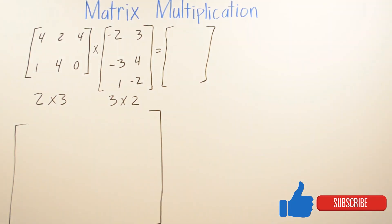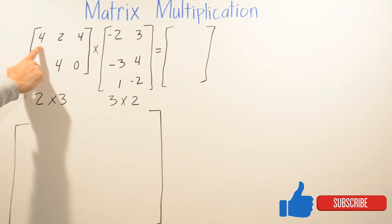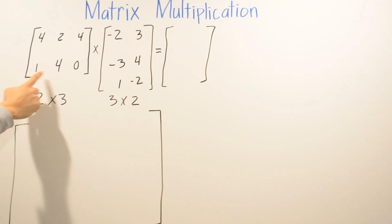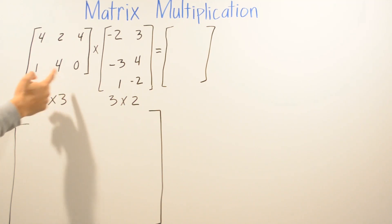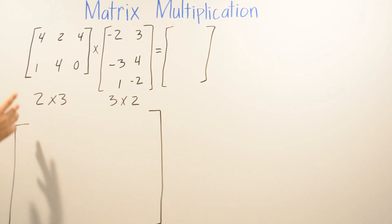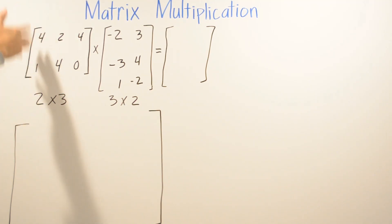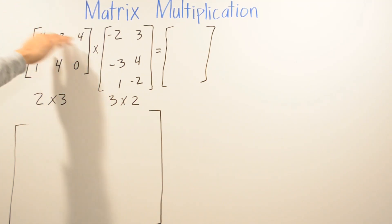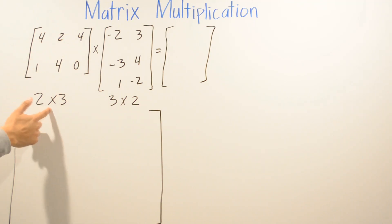In this first example, the first matrix has values 4, 2, 4, 1, 4, and 0. It has two rows by three columns, so it is a 2 by 3 matrix.